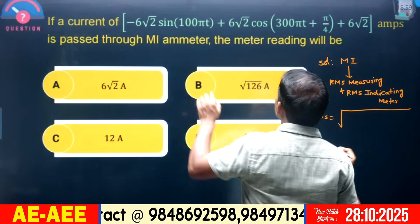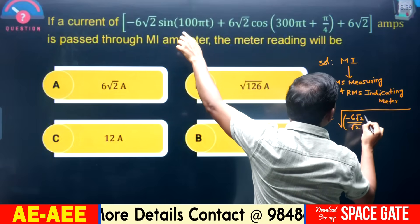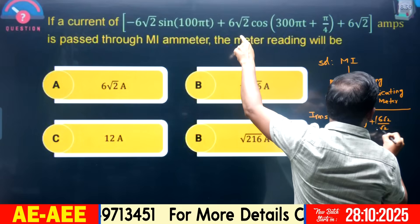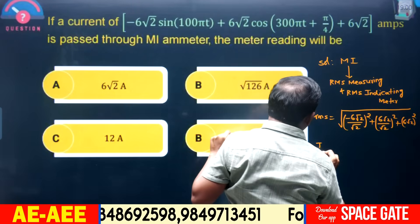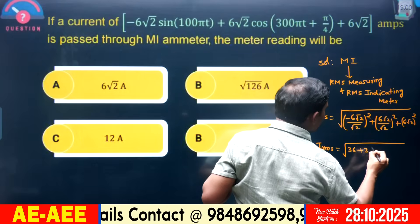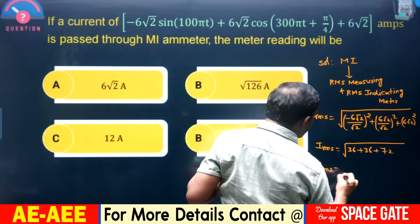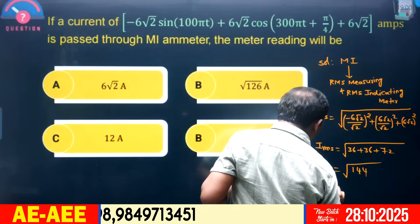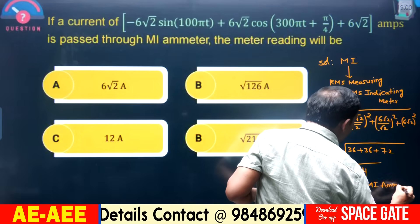To find the RMS value: for each sinusoidal term, divide the amplitude by √2 and square it. First term: (6√2 / √2)² = 6² = 36. Second term: (6√2 / √2)² = 36. The third term is a DC constant 6√2 — wait, it is actually a DC value of 6 — squared directly: 6² = 36 × 2 = 72. So I_RMS = √(36 + 36 + 72) = √144 = 12 amperes. This is the MI ammeter reading.